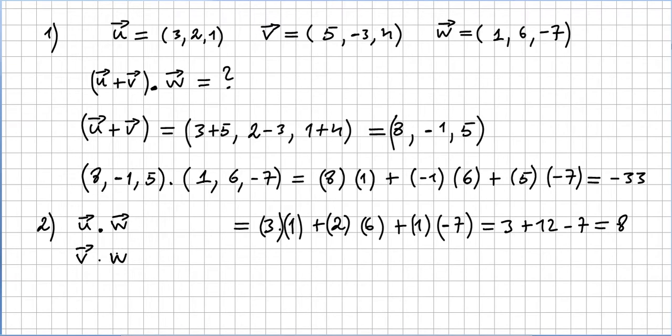v times w will be 5 times 1, that's 5, minus 3 times 6, that's -18, and 4 times (-7), that's -28. I'm getting -41.